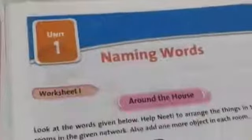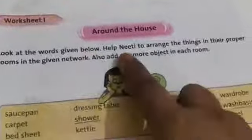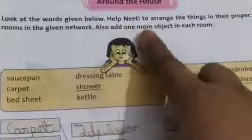Today let us start with page number 1. This is page number 1. Today's topic is naming words. We will start worksheet number 1 — Around the House. This is a house. In the house, so many things are there. There is a carpet, bed, clothes, window. So many things are there in this room. Look at the words given below. Help Niti to arrange these things in their proper rooms in the given network. And also add one more object in each room.